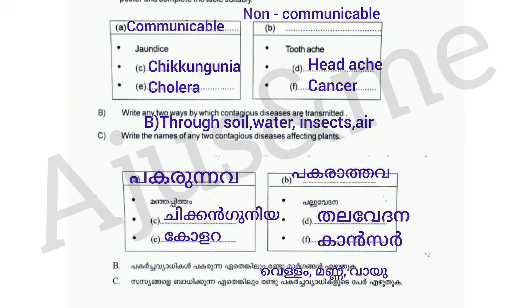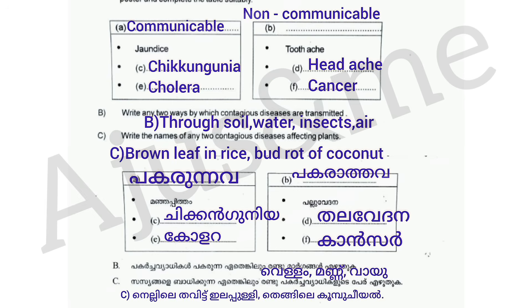Write the names of any two contagious diseases affecting plants. Examples are brown leaf in rice, and budrot of coconut.